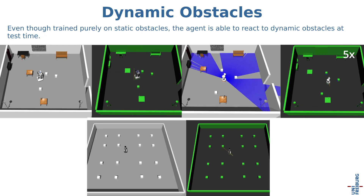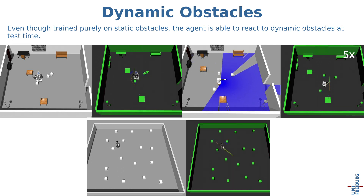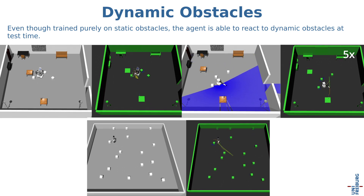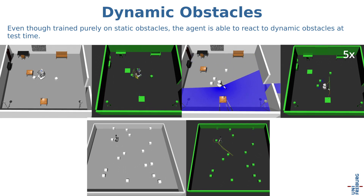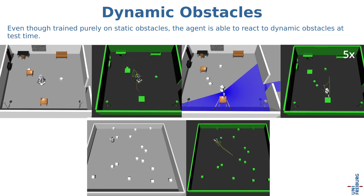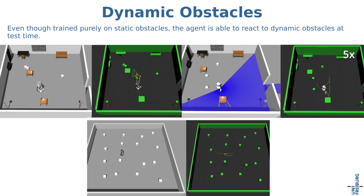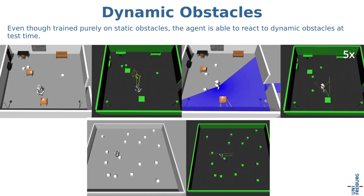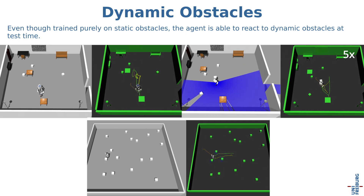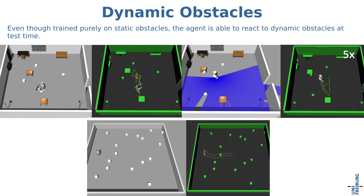Even though trained purely on static obstacles, the agent is able to immediately react to dynamic obstacles and changes in the environment at test time. The flexibility of the reinforcement learning approach means that there is no additional cost for re-planning.